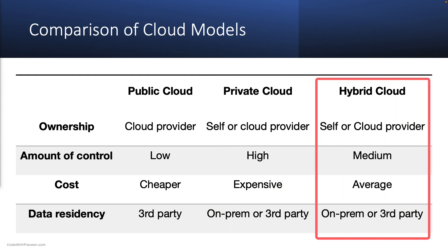Hybrid clouds offer the best of both worlds, allowing organizations to use their private cloud resources while leveraging public cloud resources during surge times. This model is ideal for organizations that must process large volumes of data at certain times of the year, such as during peak sales.